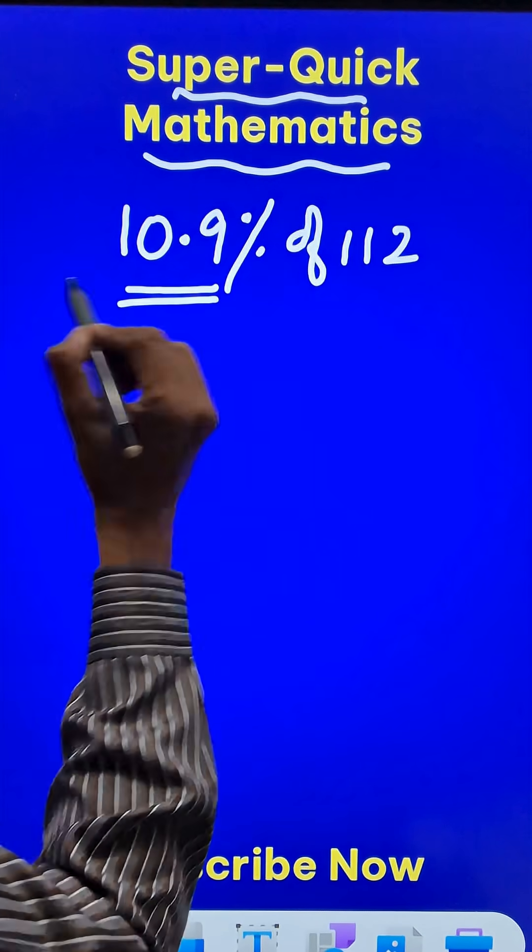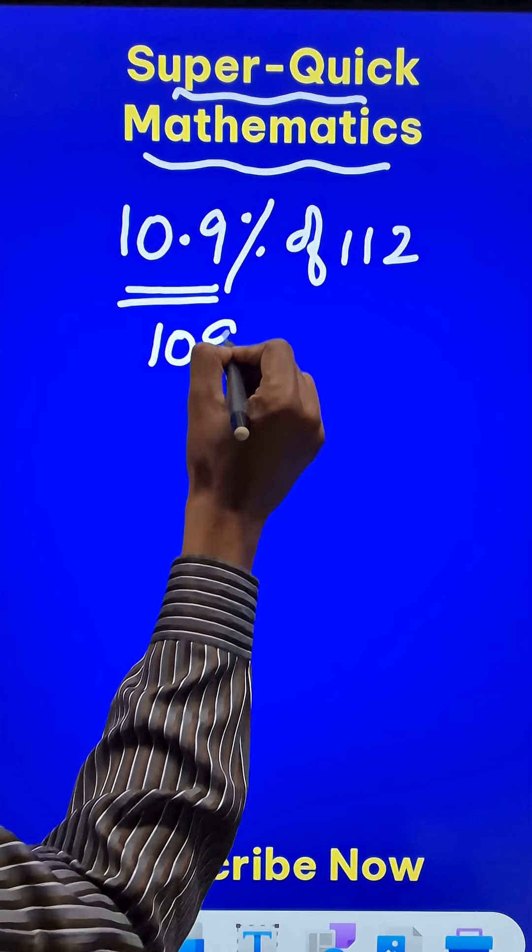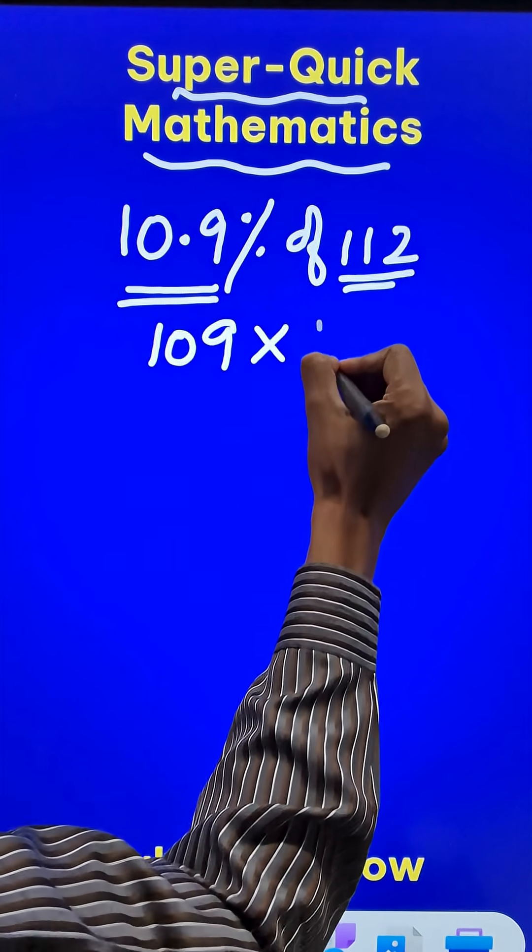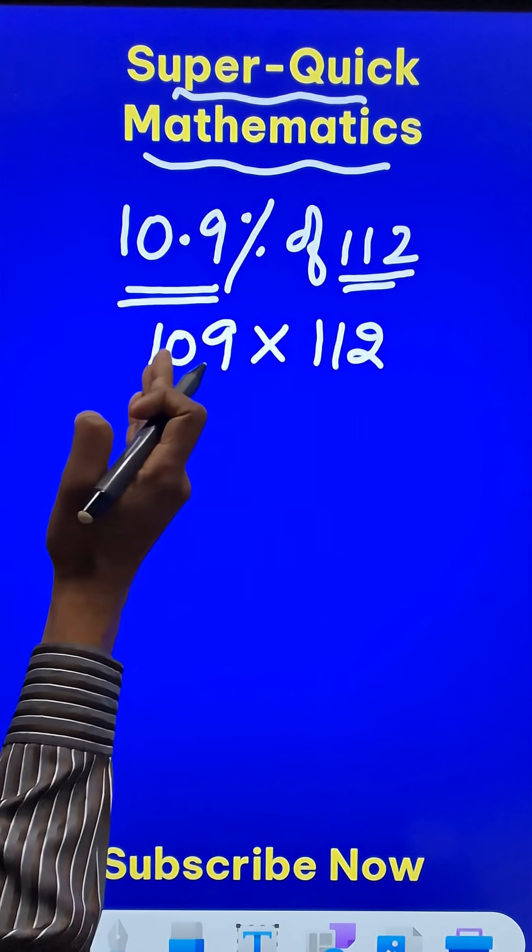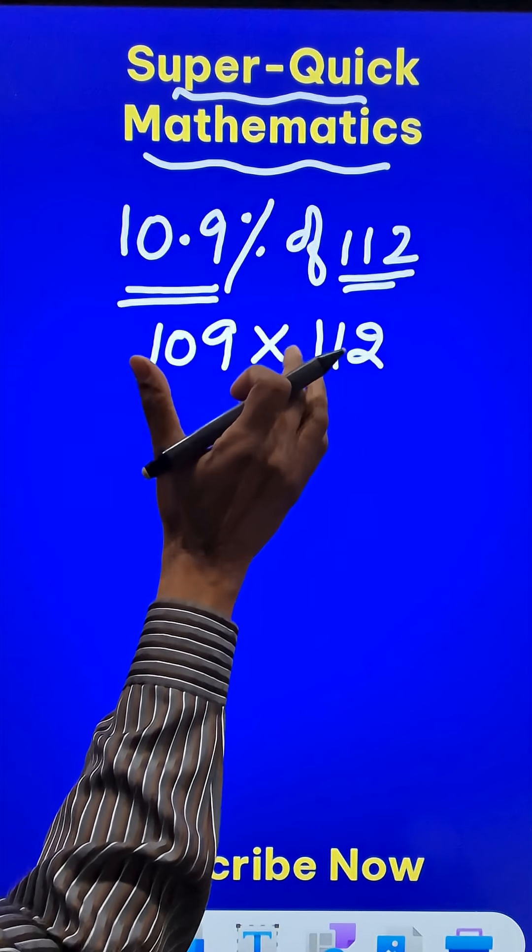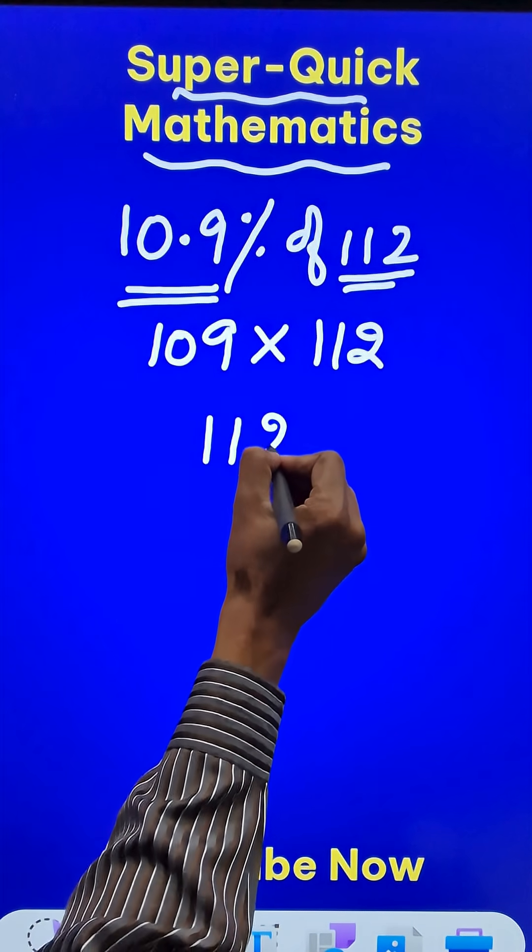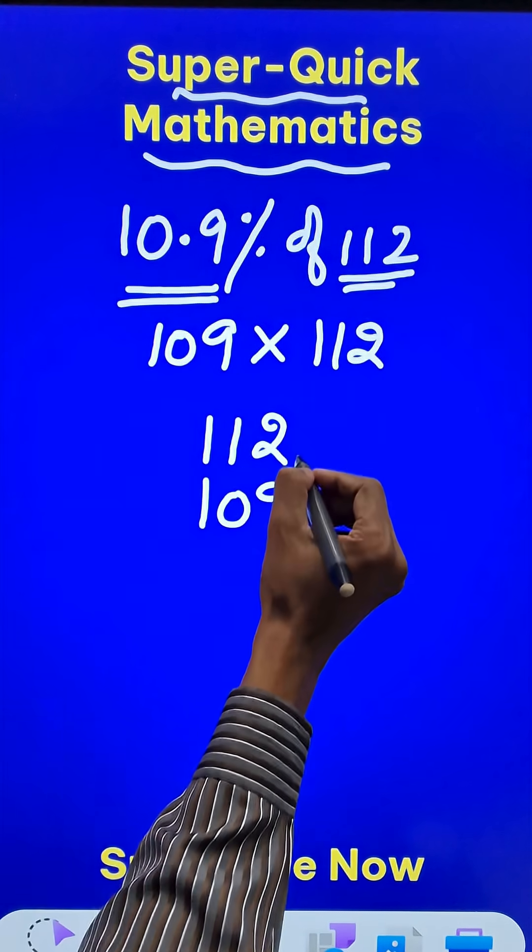The number irrespective of decimal here is 109 and of means multiply. 112 itself is a three-digit number. Now, both of them are very close to 100. So, if I can multiply them using some kind of shortcut trick, I will get my percentage also.